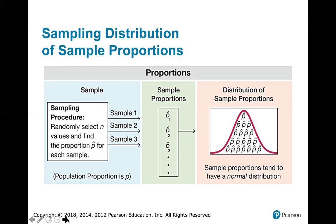If you look at the distribution of sample proportions, it turns out that sample proportions tend to have a normal distribution. If you look at the mean of that distribution, we can compute it using what we learned about discrete probability distributions. It turns out — and we showed this back in chapter 6 — that the mean of the sampling distribution of sample proportions is equal to the population proportion p.